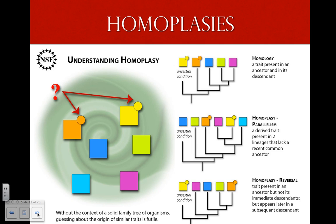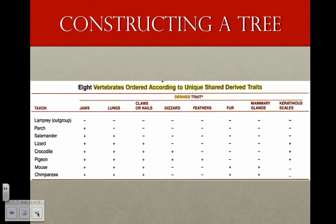To illustrate how a phylogenetic tree is constructed, take eight vertebrates: the lamprey, perch, pigeon, chimpanzee, salamander, lizard, mouse, and crocodile. There is no convergent evolution or evolutionary reversal here. We'll look at traits that are present (plus) or absent (minus). Lampreys are jawless fish that separated from the lineage leading to the other vertebrates before jaws arose. So the lamprey is an out-group.